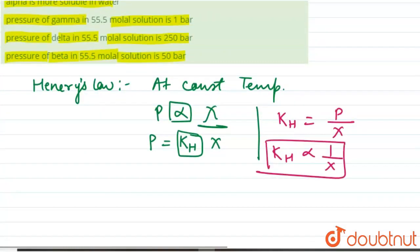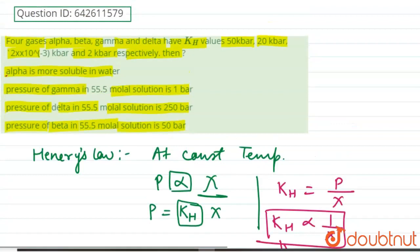Now let us move to the first option. First option is alpha is more soluble in water. Now we can see from the given data that alpha has KH value 50 kilobar, which is very high.